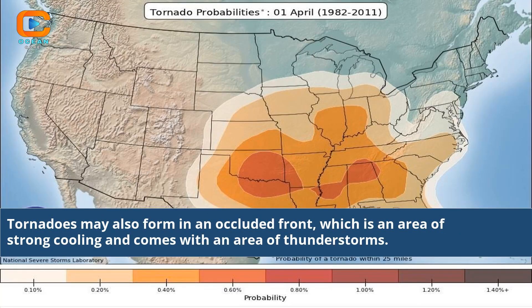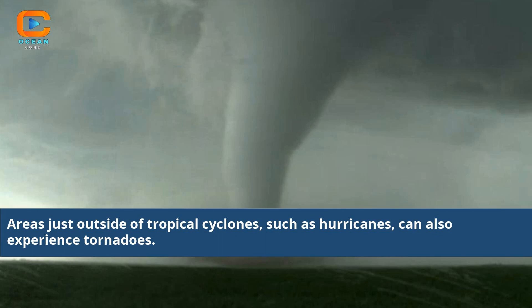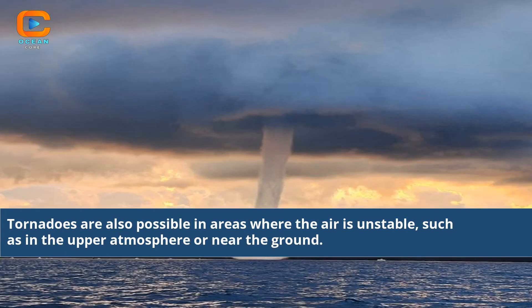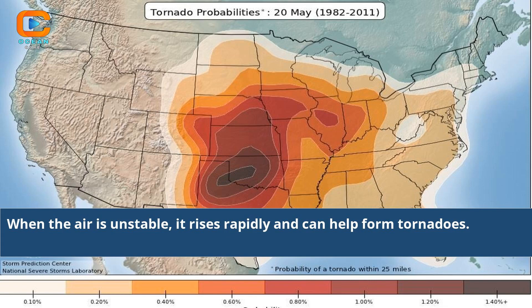Tornadoes may also form in an occluded front, which is an area of strong cooling and comes with an area of thunderstorms. Tornadoes are also possible in areas where the air is unstable, such as in the upper atmosphere or near the ground. When the air is unstable, it rises rapidly and can help form tornadoes.